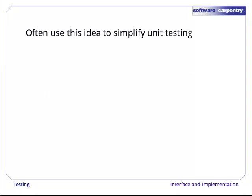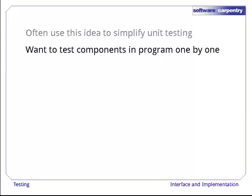We often use this idea, the separation between interface and implementation, to simplify unit testing. The goal of unit testing is to test the components of a program one by one. That's why it's called unit testing.